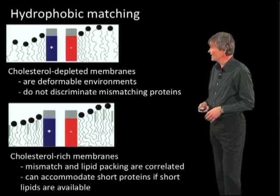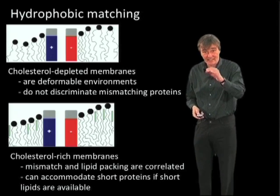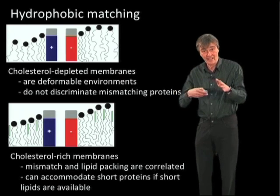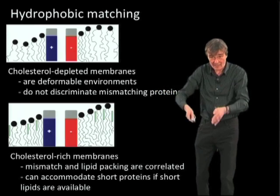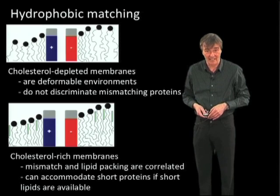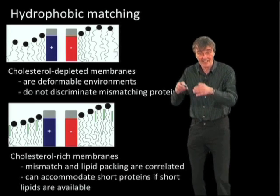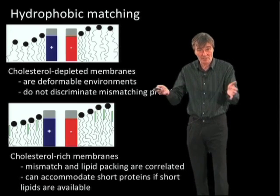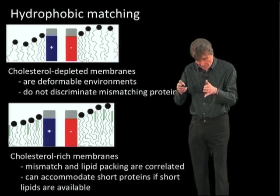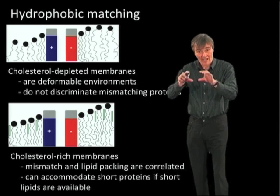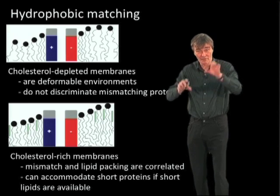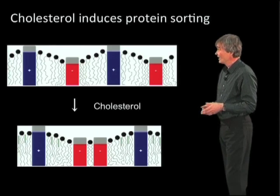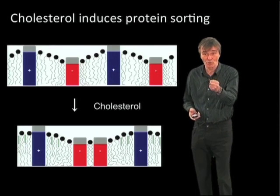Cholesterol-depleted membranes, like the endoplasmic reticulum, are deformable and therefore tolerate transmembrane domains of different lengths. But when cholesterol concentration increases, this mismatching becomes a problem, and it is much more difficult to accommodate proteins of different lengths in a cholesterol-rich membrane. This means that cholesterol induces protein sorting.